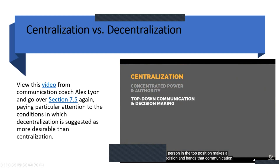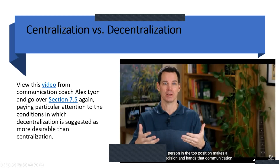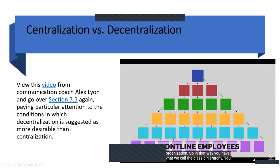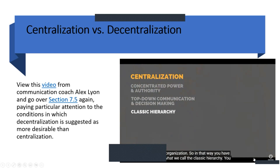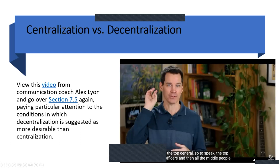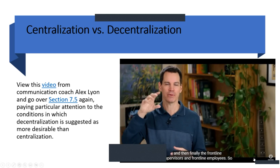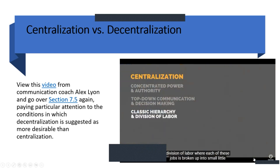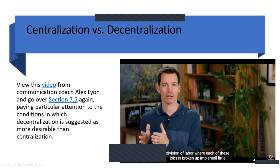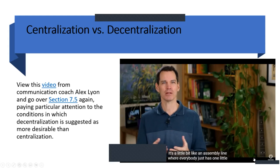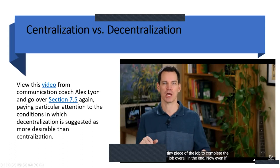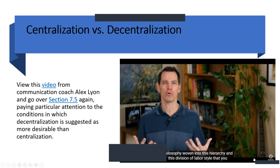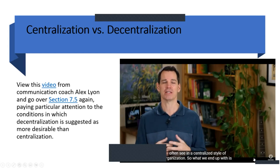You'll see quite a bit of top-down communication where the person at the top makes a decision and hands it down the chain of command all the way to front-line employees — the classic hierarchy, like a military style with a pyramid structure. As part of every pyramid, you also frequently see division of labor, where each job is broken into small pieces, like an assembly line. Even in an office setting, you can feel this assembly line philosophy woven into the hierarchy and division of labor style of centralized organizations.